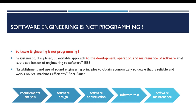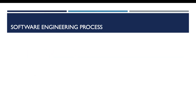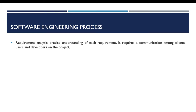So software engineering is simply a process which is commonly composed of five phases, from the requirement analysis phase up to the software maintenance phase. For the first phase — the requirement analysis phase — the engineer is asked to communicate with his clients in order to gather and understand precisely those requirements.